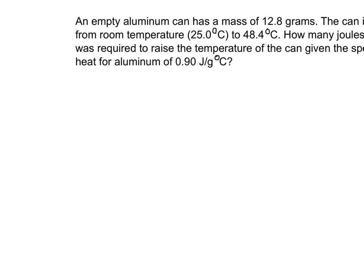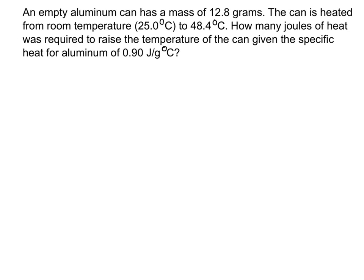So let's try using this equation to solve a problem. So here's the problem that we're going to solve. It says an empty aluminum can has a mass of 12.3 grams. And the can is heated from room temperature of 25 degrees Celsius up to 48.4 degrees Celsius. It says how many joules of heat was required to raise the temperature of the can given the specific heat for aluminum is 0.90 joules per gram degree Celsius.